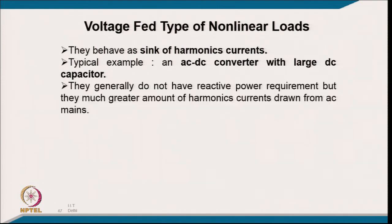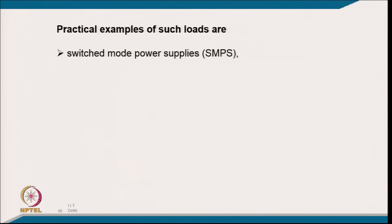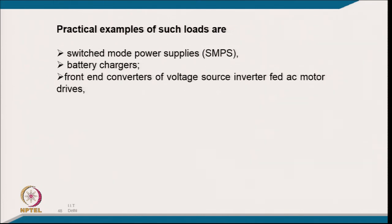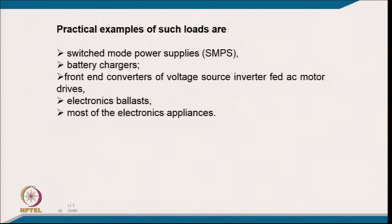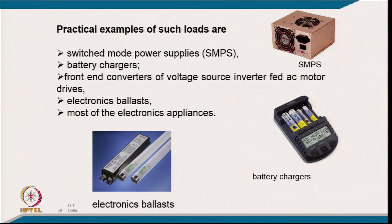Voltage-fed loads behave as a sink of harmonic currents. Examples are diode rectifiers with large DC capacitors followed by voltage source inverter drives. They generally do not draw reactive power but draw much greater harmonic current with high crest factor — discontinuous peaky pulses in single-phase, or six-pulse patterns in three-phase. Practical examples include switch-mode power supplies, battery chargers, front-end converters for voltage source inverter AC motor drives, and electronic ballasts.